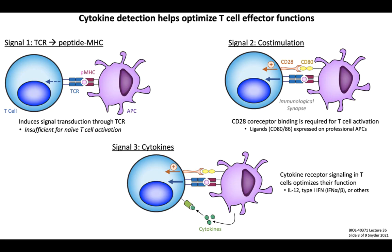Although not absolutely required for T cell activation, we also consider cytokines to be signal number three. APCs and other cell types in the tissue environment can produce inflammatory cytokines detected by cytokine receptors on the T cell. When detected alongside TCR and CD28 signaling, these cytokines can improve T cell survival, optimize effector functions, and increase memory T cell formation. Major signal three cytokines for cytotoxic CD8-positive T cell differentiation include IL-12 as well as type 1 interferons — interferon alpha and interferon beta.